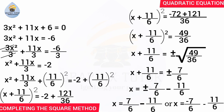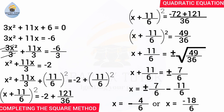Since they have the same denominator, we focus on the numerators. For the positive case: 7 minus 11 gives minus 4, so x equals minus 4 over 6. Simplifying, 2 goes into 4 twice and into 6 three times, giving x equals minus 2 over 3. For the negative case: minus 7 minus 11 gives minus 18, so x equals minus 18 over 6, which simplifies to x equals minus 3.